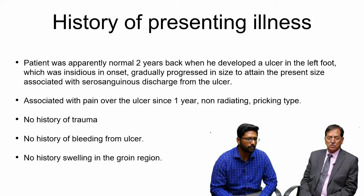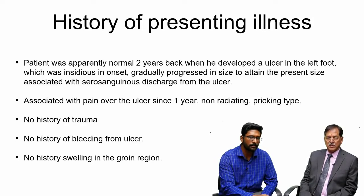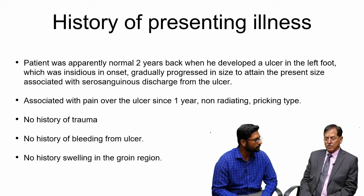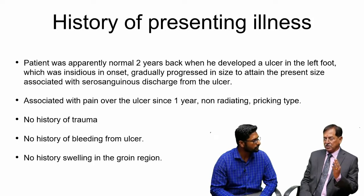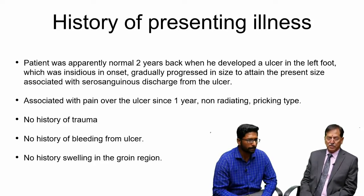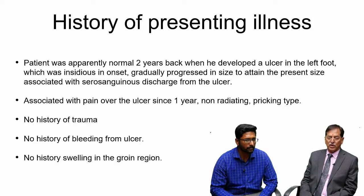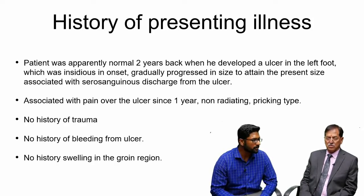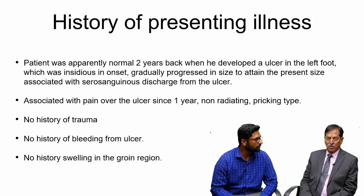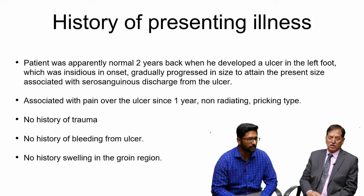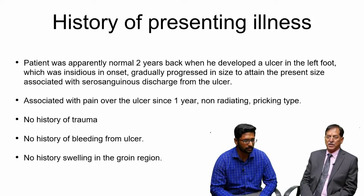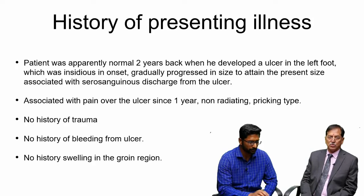The patient had no history of trauma, no history of bleeding from the ulcer, and no history of swelling in the groin region. Bleeding can occur from healthy granulation tissue in healing ulcers and also from friable malignant ulcers. Groin swelling was asked about because it could indicate either infective lymphadenitis or lymph node metastasis if the ulcer is malignant.